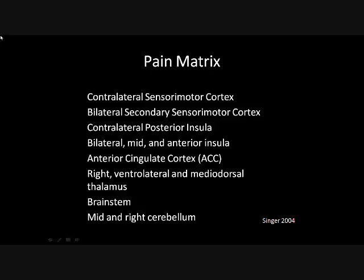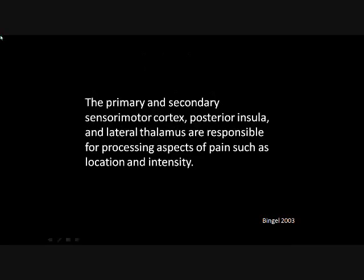The pain matrix consists of the contralateral sensory motor cortex, bilateral secondary sensory motor cortex, the contralateral posterior insula, bilateral mid and anterior insula, the anterior cingulate cortex known as the ACC, the right ventrolateral and mediodorsal thalamus, the brainstem, and the mid and right cerebellum. The primary and secondary sensory motor cortex, posterior insula, and lateral thalamus are responsible for processing aspects of pain such as location and intensity.